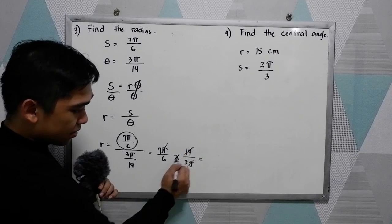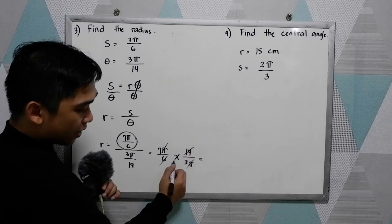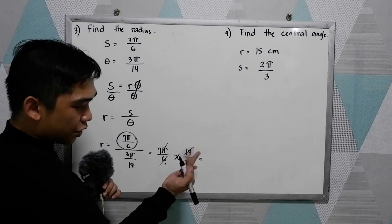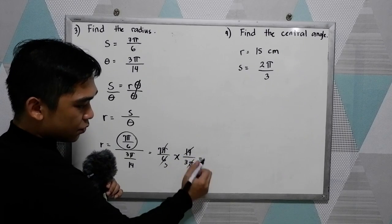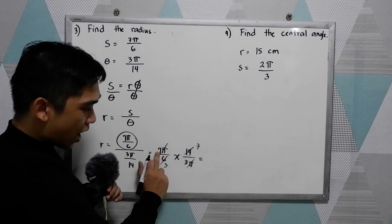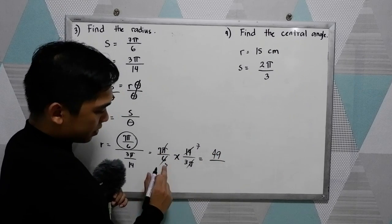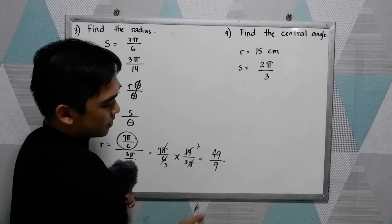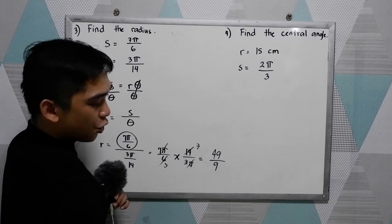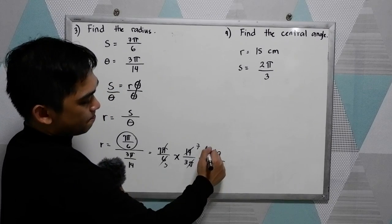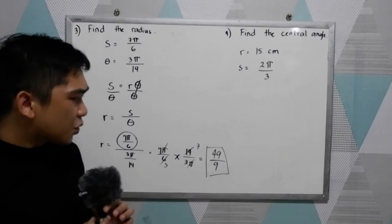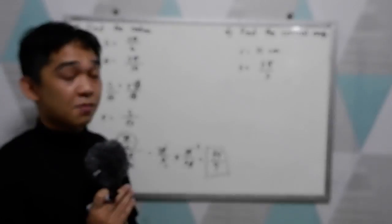So 14 and 6 divisible by 2 so we have 3 then we have 7. Now we have 7 times 7, that is 49 over 3 times 3, 9. So 49 over 9. If you want to write it into decimal, so divide then write into decimal form.